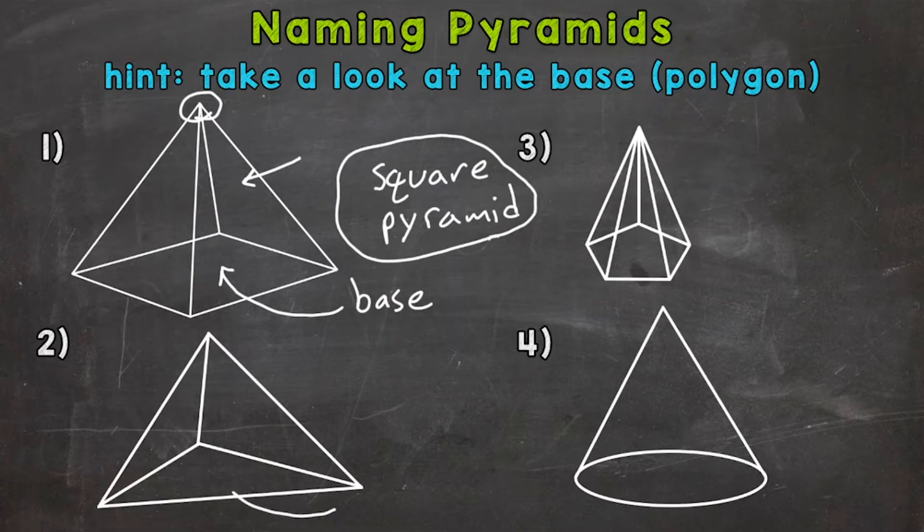For number two, our base is a triangle, so number two is a triangular pyramid.